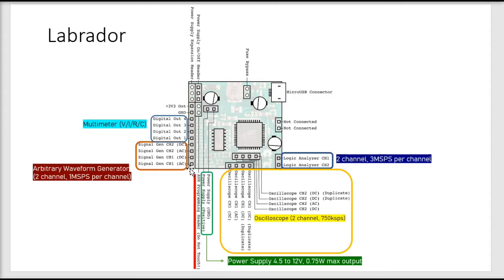If you see the lab manual, the second port from the bottom, which states as signal generator channel 1 DC, that's the channel we are going to use. And ground could be anything, just to be clear.